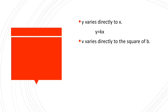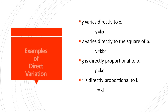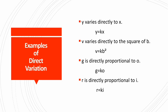Second, v varies directly to the square of v. It is expressed as v equals kb squared. Third, g is directly proportional to o. It is shown as g equals kao. Fourth, r is directly proportional to i. It is displayed as r equals ka. These are only some of the examples of direct variation.